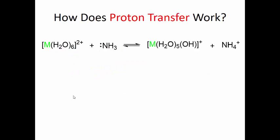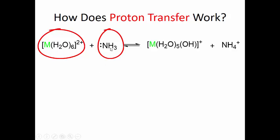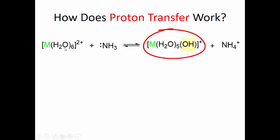The way proton transfer works: here's my metal hydrate — it has six waters around it. Here's my ammonia. If you look at the other side of the equation, one of the H₂Os has lost an H, because NH₃ has pulled off an H. So you have an OH and then five H₂Os — no longer six. And then NH₃ becomes NH₄⁺.